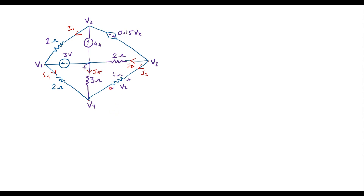In this circuit, we can observe that this is the reference node and its voltage is 0. We have to find V1, V2, V3, and V4 voltages with respect to this reference, since its voltage is 0. Here V1 is directly connected to ground through a 3-volt voltage source, so we can say V1 is nothing but 3 volts. Therefore, V1 = 3 volts.